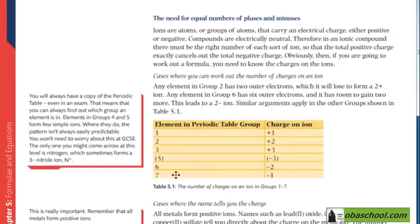Consider table 5.1, which shows you the number of charges on an ion in groups 1 to 7. It's better to memorize this table to make your work easier. For example, elements of group number one have a charge on ion of plus 1. Elements of group 2 have a charge of plus 2.